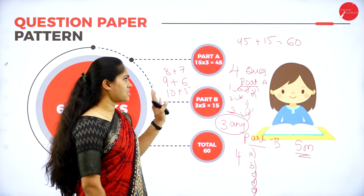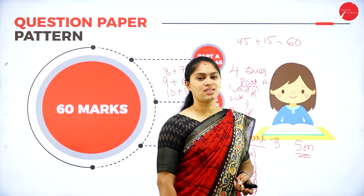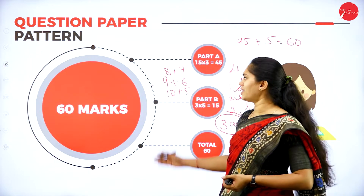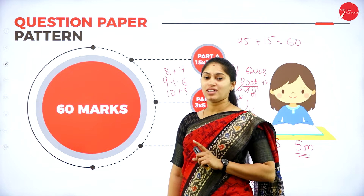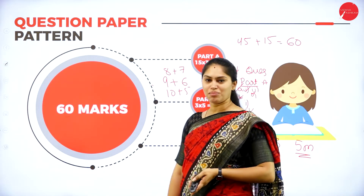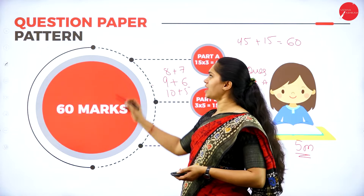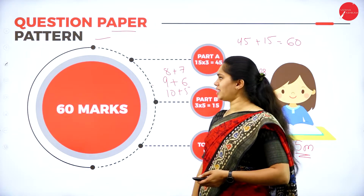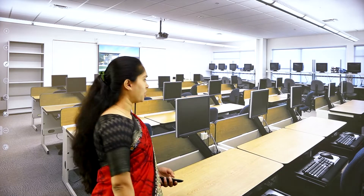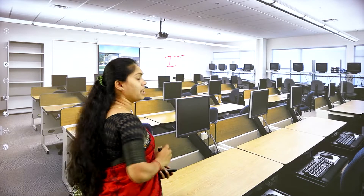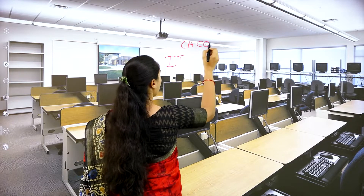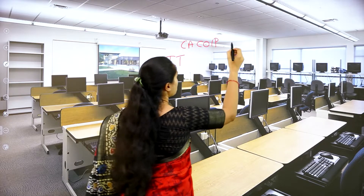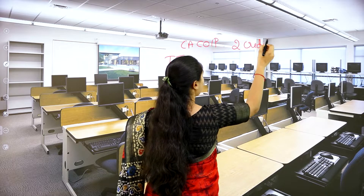It is easy to get 60 on 60 in the examination, but you should not leave any unit. The course also has a lab component: IT (Information Technology) Lab, with course code ACAC01P, worth 2 credits.